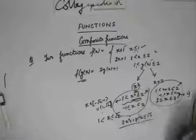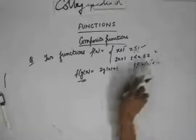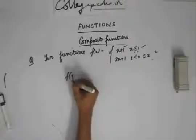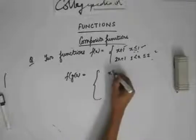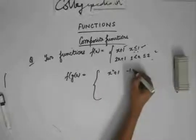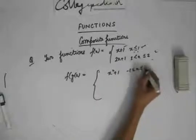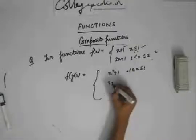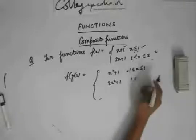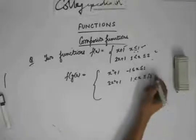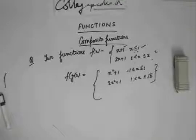This is the only solution we get. Finally, we have solved the question and can write the simplified value of f(g(x)) as: x² + 1 when x lies between -1 to 1, and 2x² + 1 when x lies between 1 to 2. This is how we find f(g(x)).